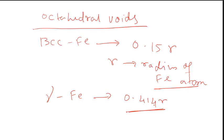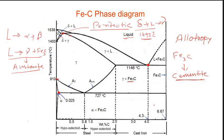That is why gamma iron (FCC) can hold more carbon at a given temperature compared to BCC iron — the solubility of carbon in FCC austenite is much higher. The maximum it can go is up to about 2.1% carbon. This is how, with the help of structure-property correlations, you can explain why the solubility of carbon is different in different forms of iron.